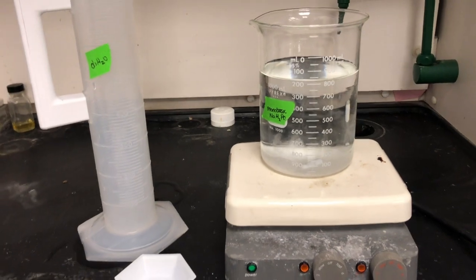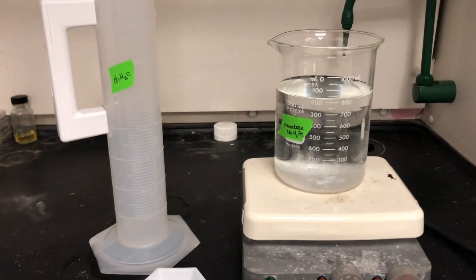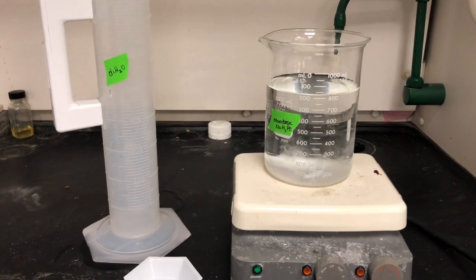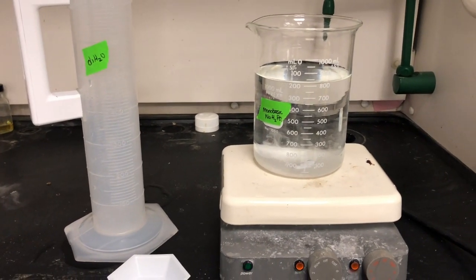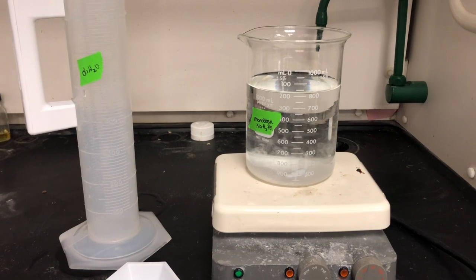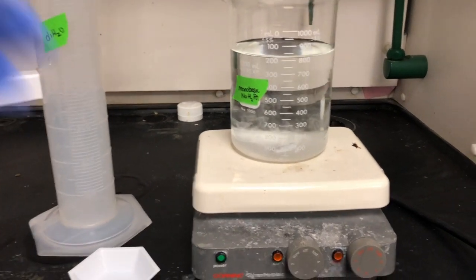You're going to put it in a beaker along with about 800 milliliters of DI water, and you're going to create a vortex within the solution to evenly mix the solution.